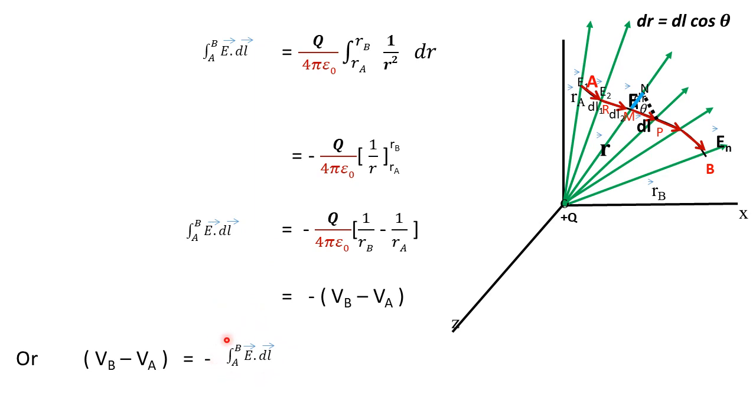So what do we get? Line integral of electric field from point A to B is the amount of work done in carrying a unit positive test charge from point A to point B, or is equal to negative of the potential difference between points B, that is end point, and the initial point A.